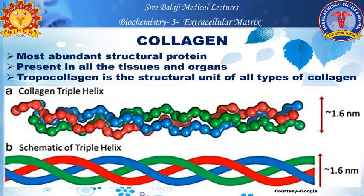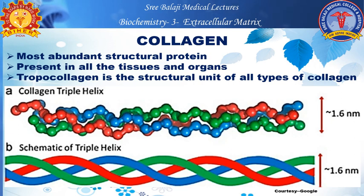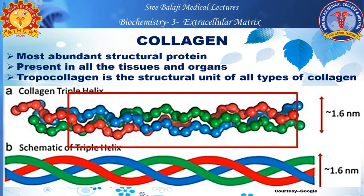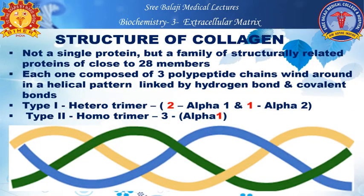Coming to collagen, which is the most abundant structural protein — it is present in all tissues and organs. It gives support, strength, and shape to the cells. Procollagen is the structural unit of all types of collagen. Collagen has a triple helical structure, unlike DNA which is a double helix. It is not a single protein but a family of structurally related proteins with close to 28 to 30 members.